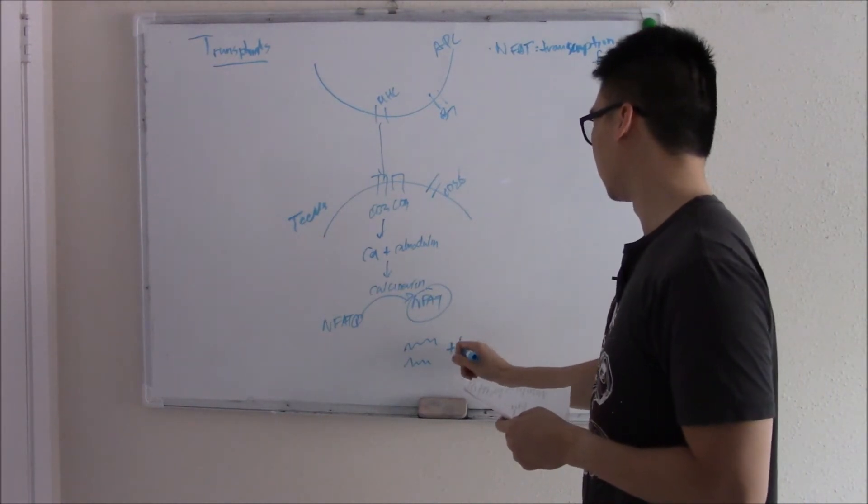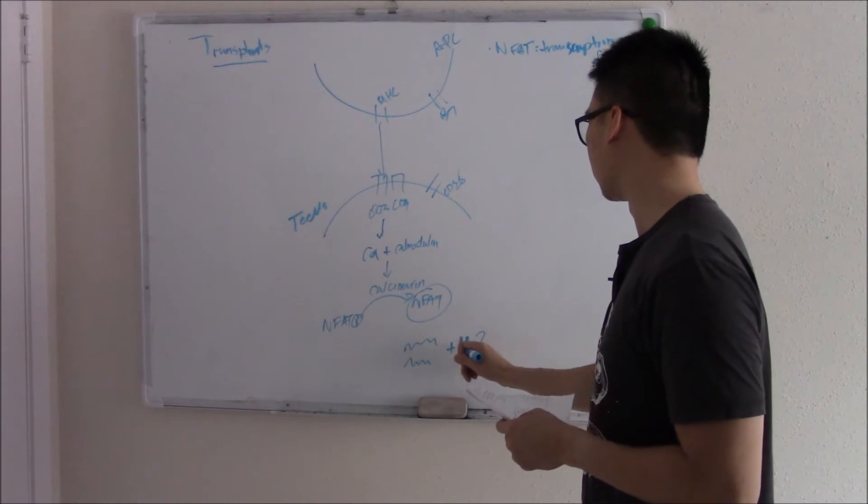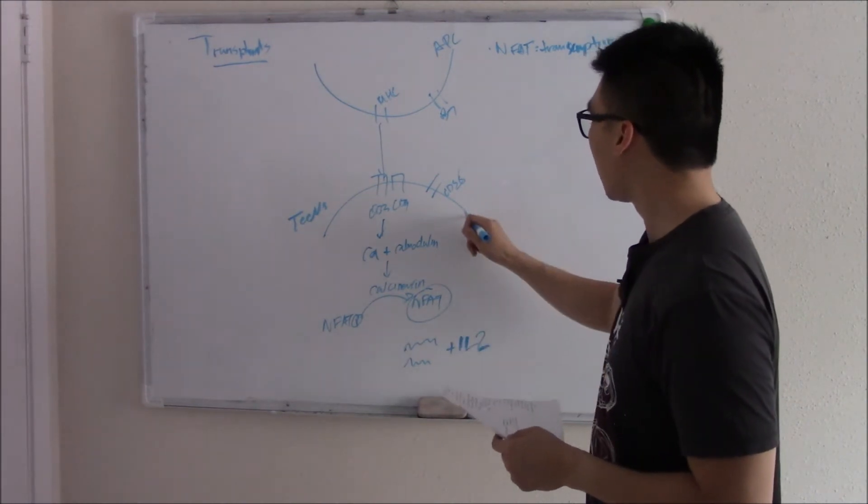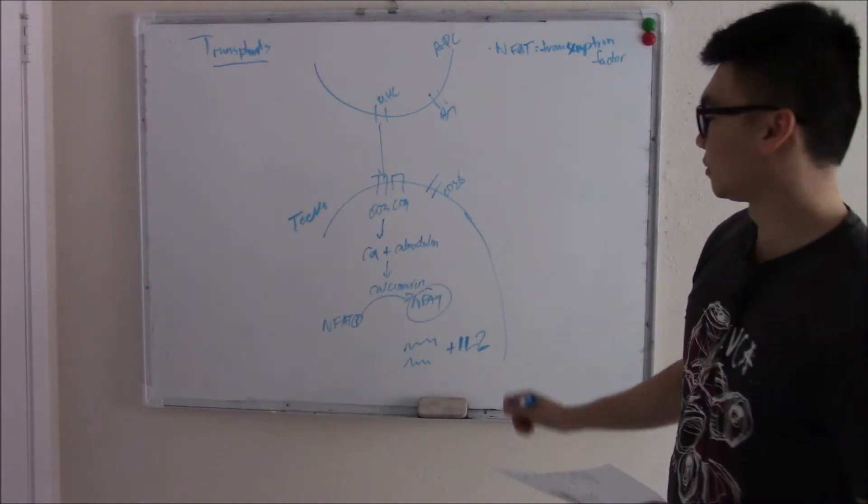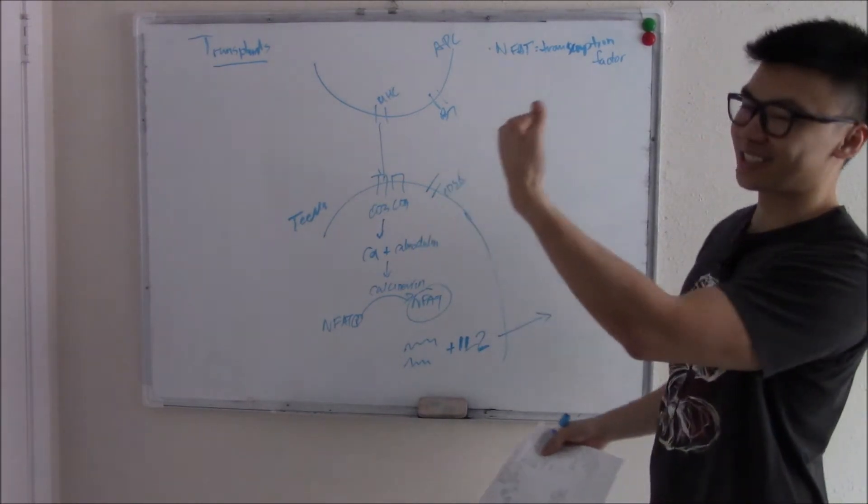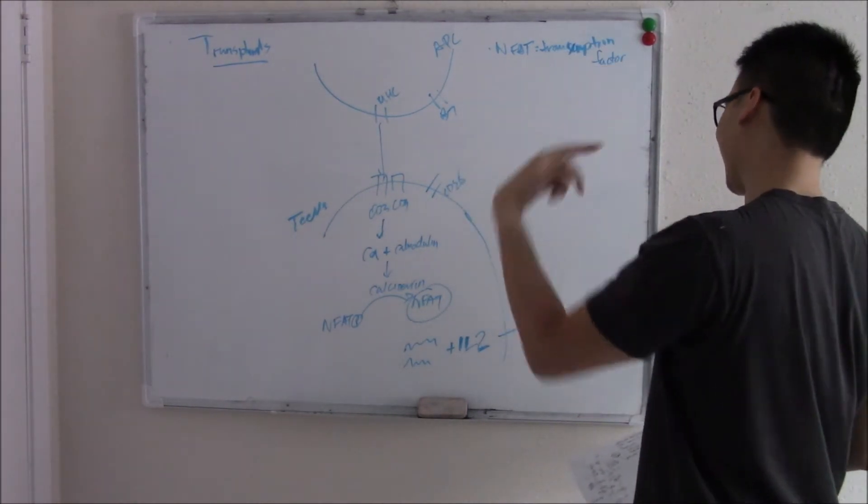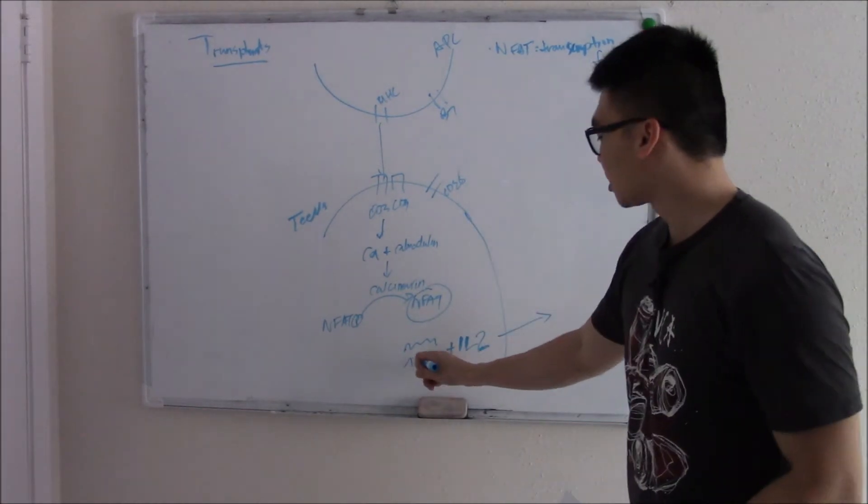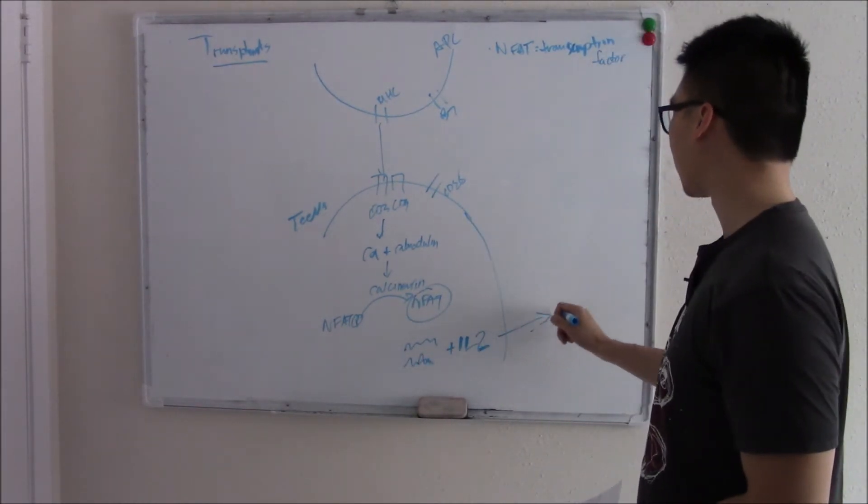Calmodulin loves to bind calcium. And when it binds to that, it will activate something called calcineurin. Calcineurin turns NFAT with a phosphate group on it to NFAT without a phosphate group on it. NFAT stands for nuclear factor of activated T cells. All you need to know is that this is a transcription factor. It works on the genetics of the cell. When it has a phosphate group on it, it's inactivated. But if you take that phosphate group off, then you activate this transcription factor. You start revving up your genes, your T cell's activated, starts producing proteins like IL-2.